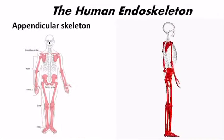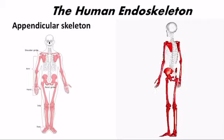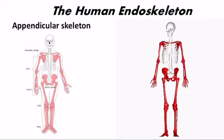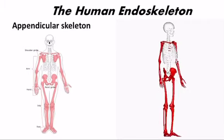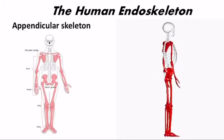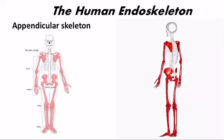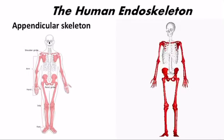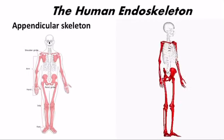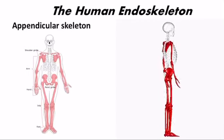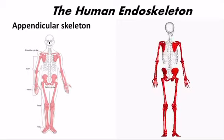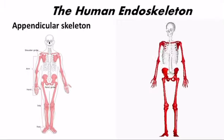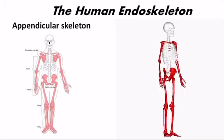The appendicular skeleton — shown in red in these diagrams — is composed of the appendages, the pectoral girdle, and the pelvic girdle. These girdles attach the upper and lower appendages to the axial skeleton.